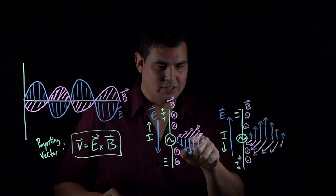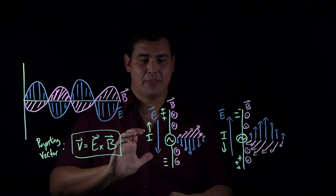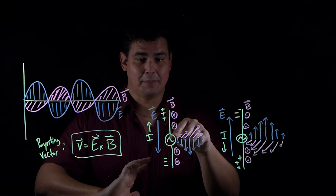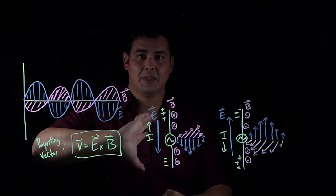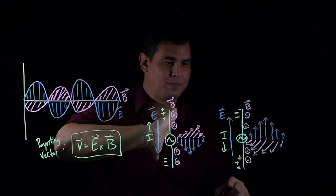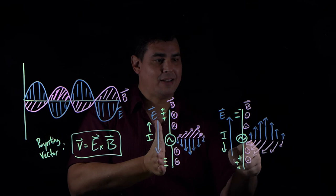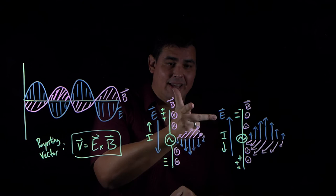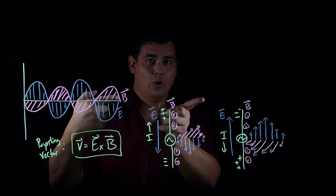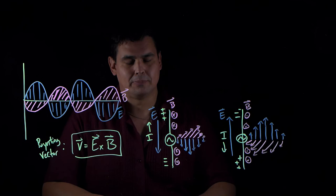So if I take my electric field pointing down, I would take my thumb and point it down, and my magnetic field is from your perspective pointing into the page. If you line up your thumb pointing down and point your fingers into the page, when you cross them — there's your velocity. And looking over here: if I take my thumb, which is my electric field, and point it up, and put my magnetic field out of the page, cross them — you can see what's happening. These vectors are just alternating, and the velocity is always pointing in the direction of motion.